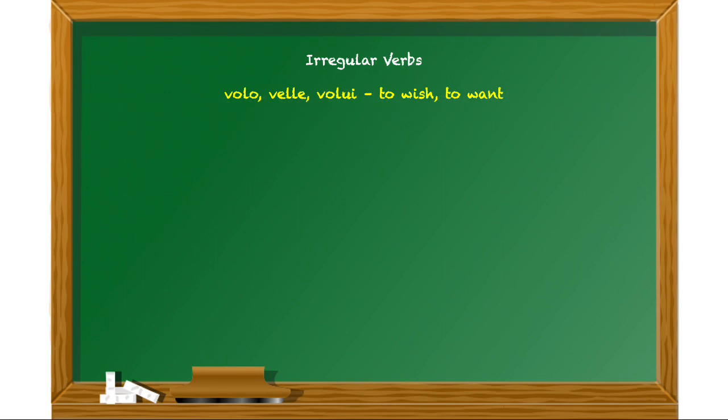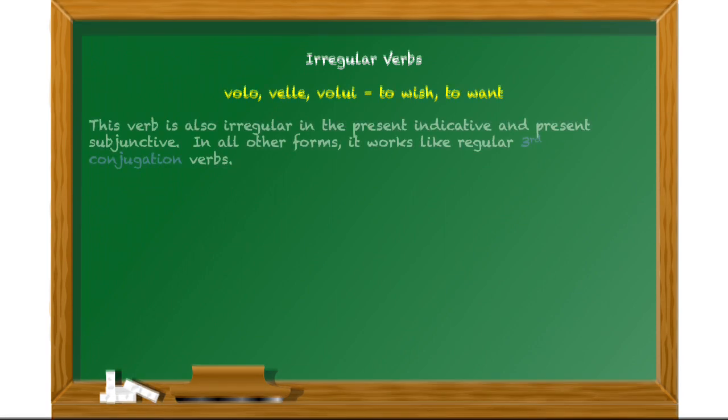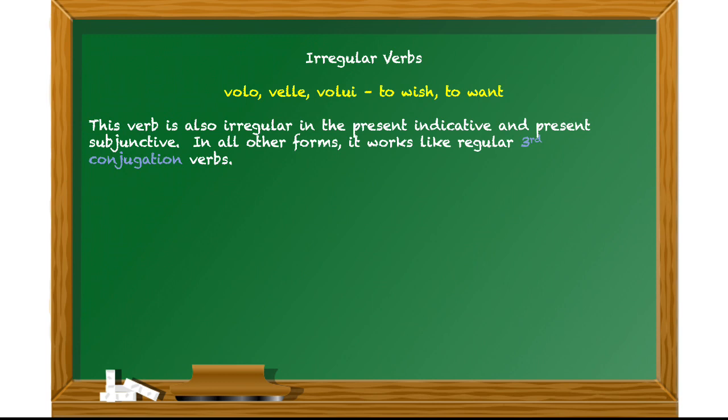So let's start off with volo, velle, volui, the word meaning to wish or to want. It's where you get words like volunteer and voluntary and volition. The key thing about this verb is that it is irregular in the present indicative and present subjunctive.